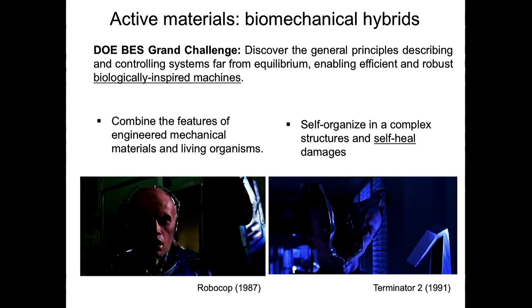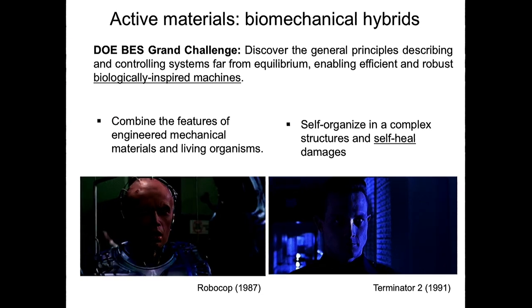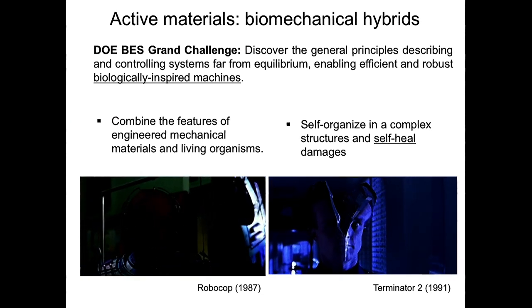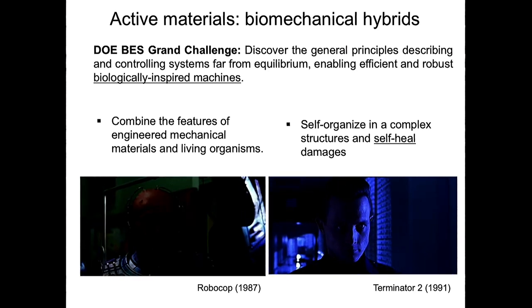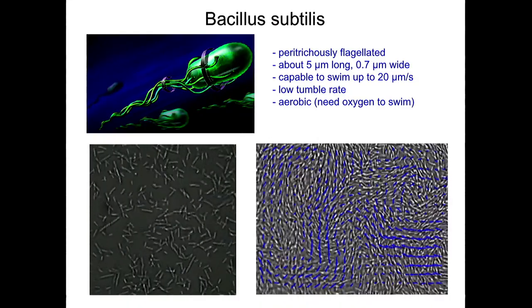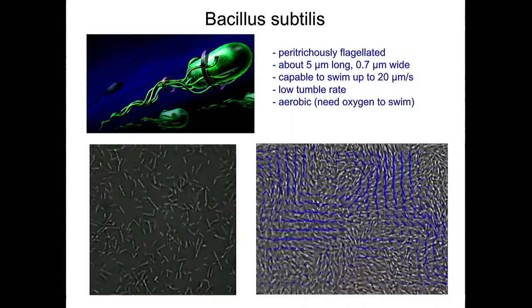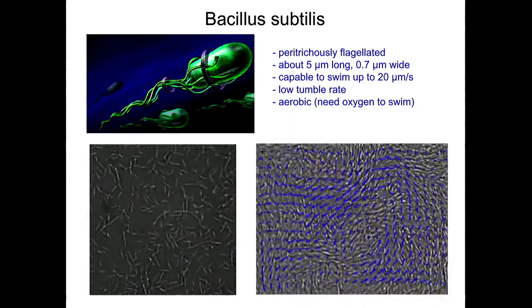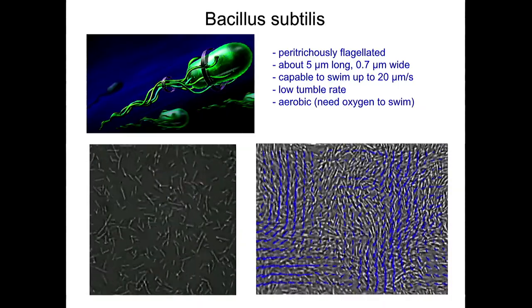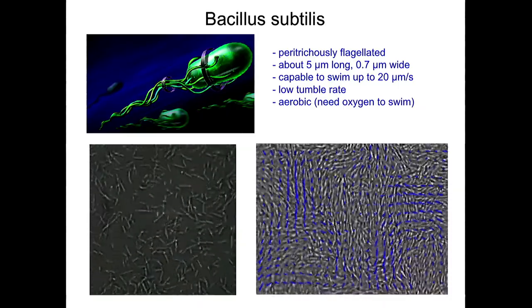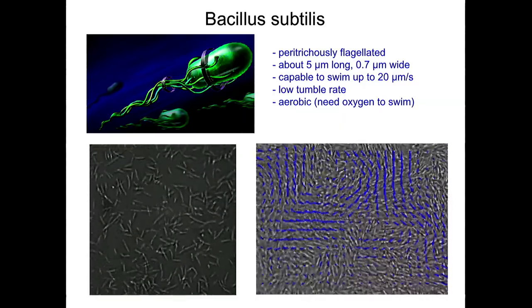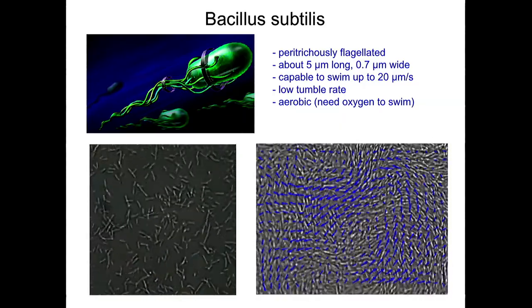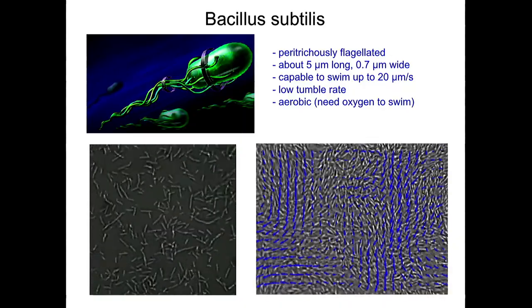And before playing with the human hybrids, biomechanical hybrids, we decided to start with something a little bit simpler with swimming bacteria. I'm sure that many of you have seen this movie or similar movies many times. Bacillus subtilis and many other bacteria like E. coli, they're pretty good swimmers. By rotating helical filaments, flagella, they can swim pretty fast.